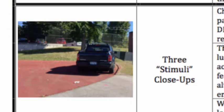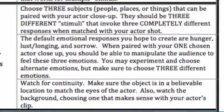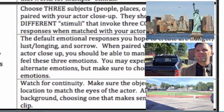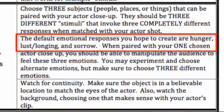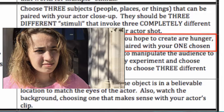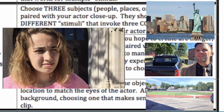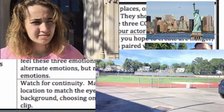Next, you'll want three stimuli close-ups. Choose three subjects — people, places, or things — that can be paired with your actor close-up. They should invoke three completely different responses when matched with your actor shot. The default emotional responses to create are hunger, lust/longing, and sorrow. When paired with your one chosen actor close-up, you should be able to manipulate the audience to feel these three emotions. You may experiment with alternate emotions, but choose three different ones. Watch for continuity: make sure the object is in a believable location to match the eyes of the actor, and watch the background to ensure it makes sense with your actor's clip.